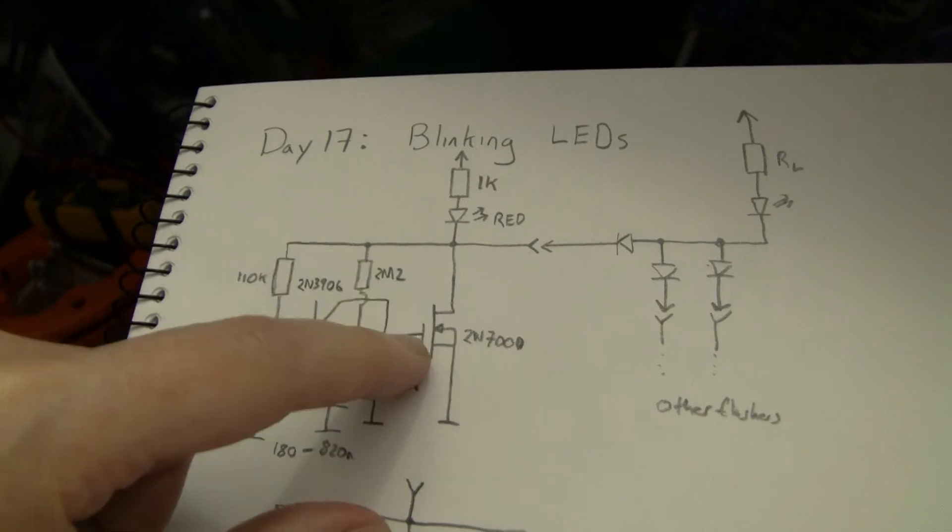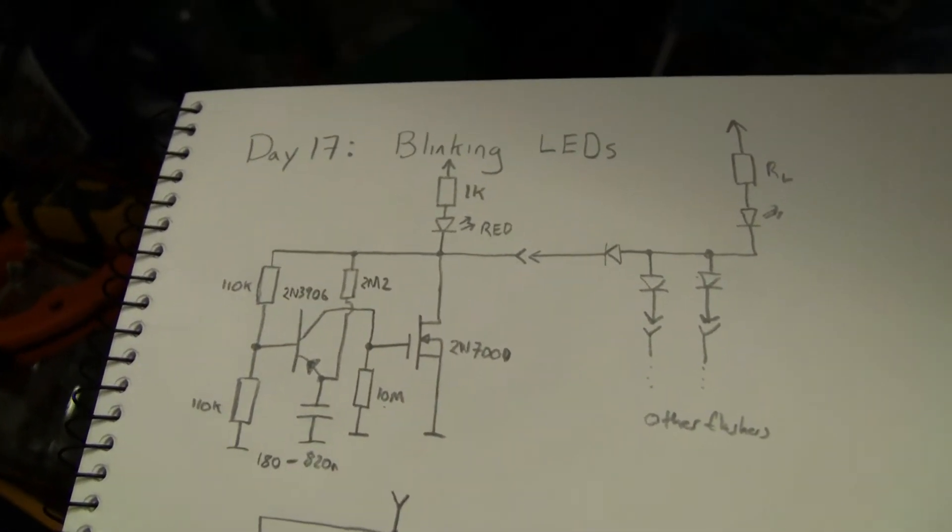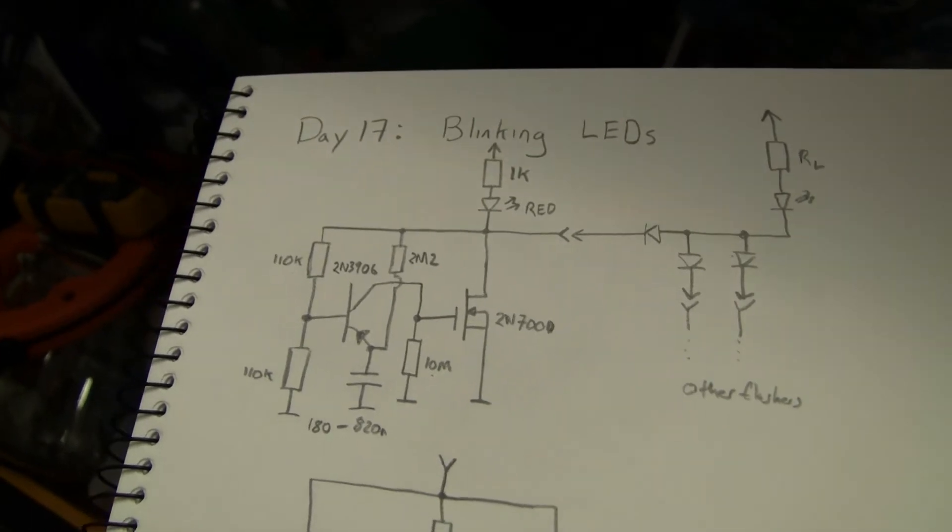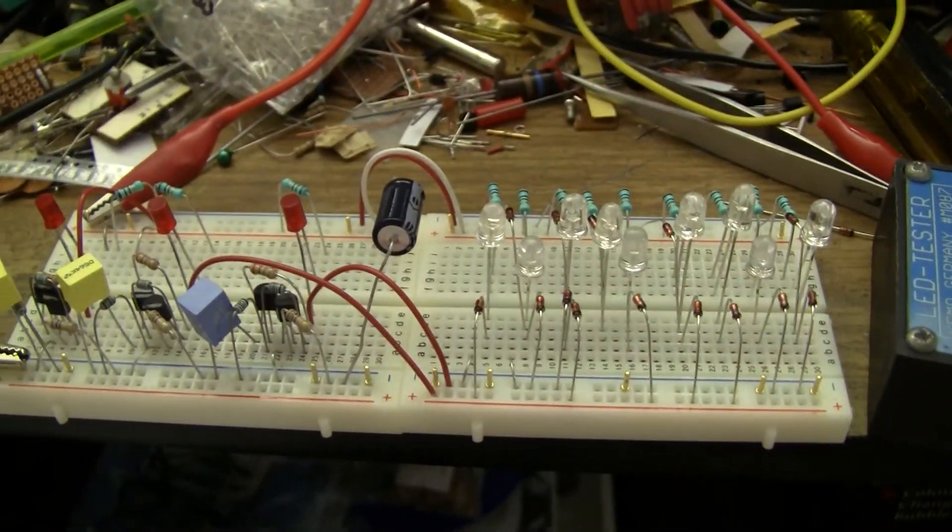The gate threshold voltage of the 2N7000 is about 2.5V, where some larger MOSFETs are around 12V. You might have to take that into account depending on what your supply voltage is. Here the unit is running off about 9V.